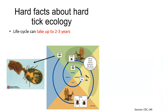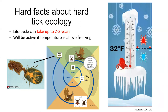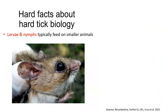The life cycle of hard ticks can take up to two to three years, meaning to go from egg to larva to nymph to adult. Ticks, particularly black-legged or deer ticks, will become active during warm winter days when the temperature is above freezing. This means that people and animals can experience a tick bite throughout the year, even in winter.